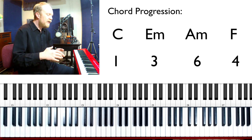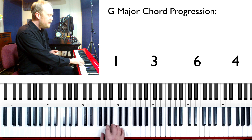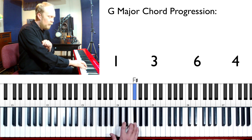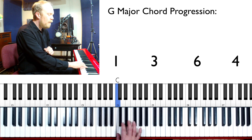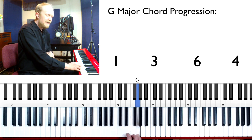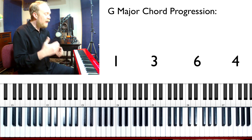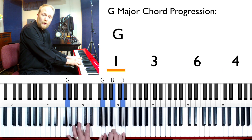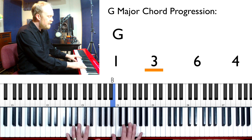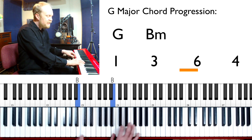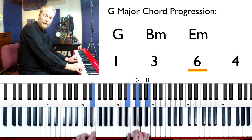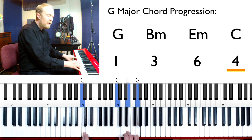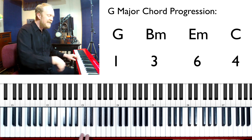So let's say we're going to transpose it to G major. G major has these notes: G, A, B, C, D, E, and F sharp. G is the first note. So that chord progression was one, three, six, four. The one chord in G is G major. The three chord is B minor. The six chord is E minor. And the four chord is C major. So now we have G major, B minor, E minor, C.